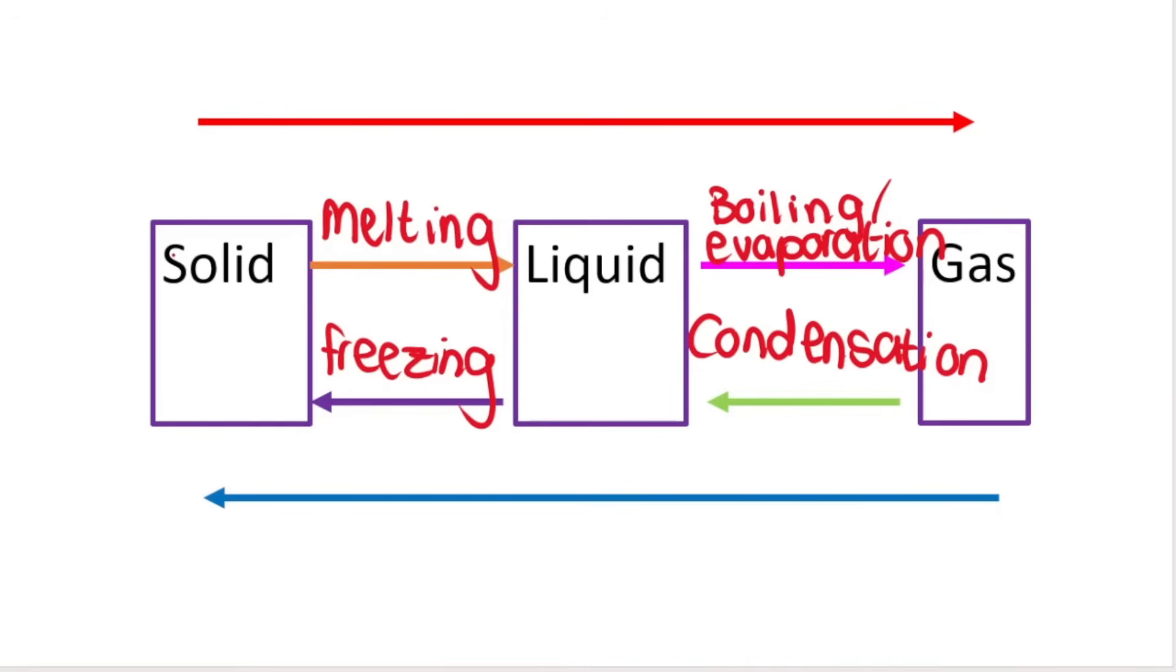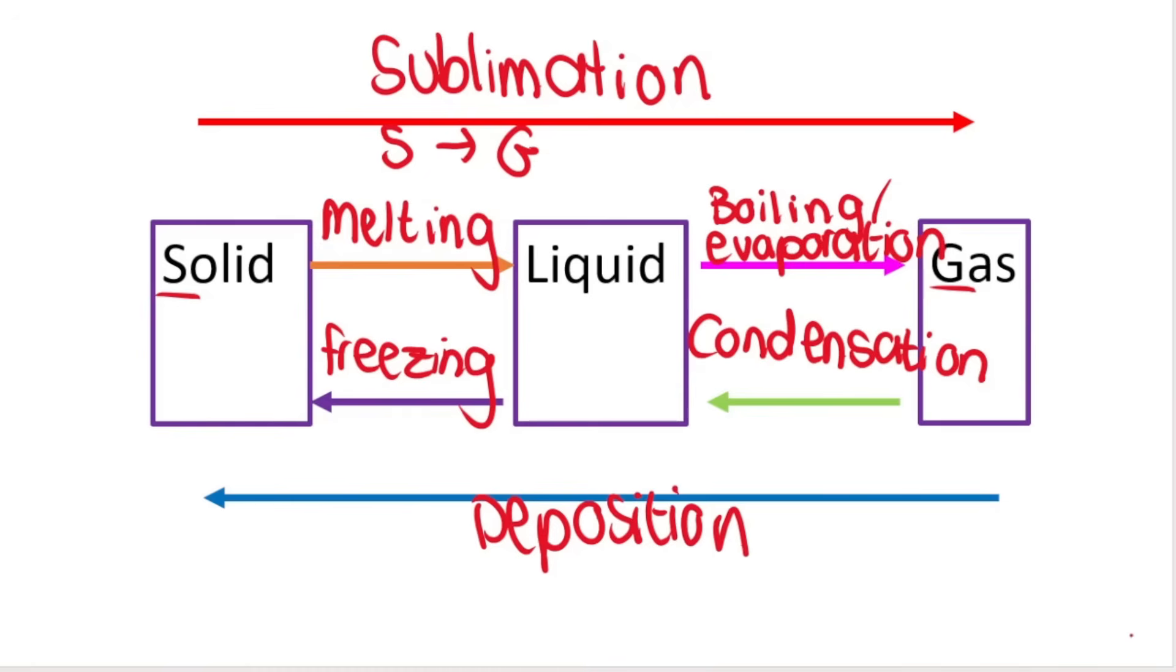Then we've got, if I go straight from a solid directly to a gas with no intermediate liquid phase in between, so the keyword is directly, that is called sublimation. And you do need to know that. Sublimation. And now I remember sublimation is we're going from a solid to a gas, solid sublimation, solid directly to a gas. And then the reverse, going from a gas back to a solid, is called deposition. So those are called phase changes. Phase changes. And yes, you do need to know them.